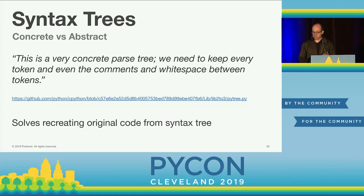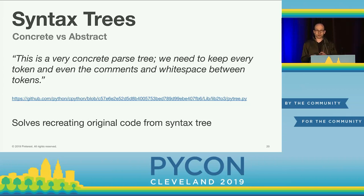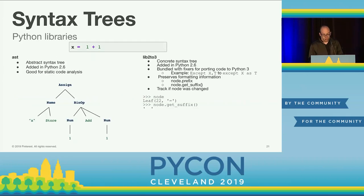A direct quote from Python's concrete syntax tree: 'we need to keep every token, every comment, and even the comments and whitespace between tokens.' There are two kinds of syntax trees: abstract syntax trees have none of the extra information — no whitespace, no comments — but because Python doesn't have a standard format, we actually need to keep all that information to recreate the original source code. This is where concrete syntax trees come in, which we'll use for everything else in this talk.